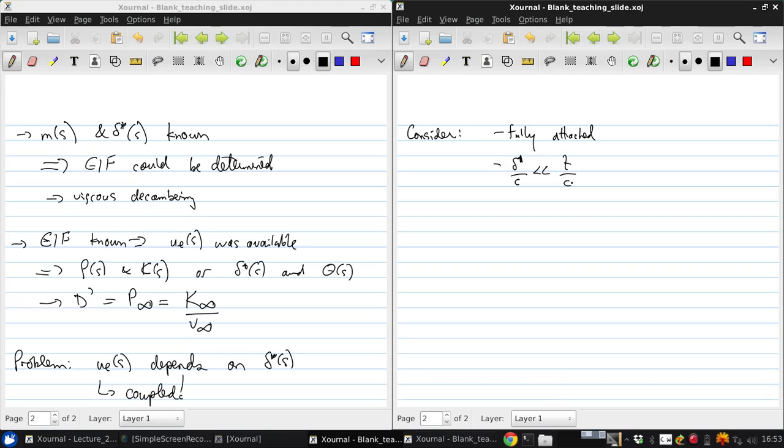In that case, UE(S) is approximately given by the equivalent inviscid flow given by the potential solution, neglecting any boundary layer viscous effects. And then the boundary layer problem can be solved without worrying about the coupling. So we can calculate the drag subject to the limitations of attached flow and thin boundary layers.